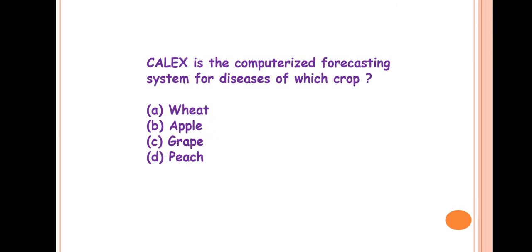Next question is: CALEX is the computerized forecasting system for disease of which crop? So the answer is D, peach. This is the computerized forecasting system for disease of peach crop.